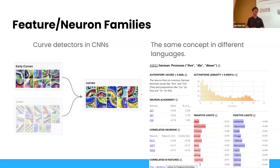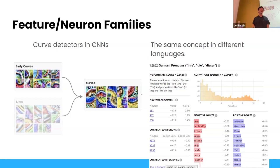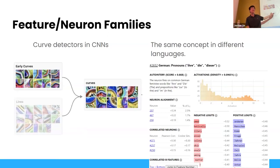One interesting feature is the word 'die.' The word 'die' means different things in English, German, and Dutch — in German, 'die' is an article. There are three different features that activate for 'die' in English, 'die' in German, and 'die' in Dutch. Neural networks are thinking about grammar in ways similar to how we would break it down, which is pretty interesting.